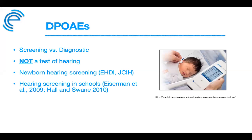For newborns with certain risk factors — such as prolonged NICU stays or syndromes — OAEs may not be sufficient and AABR is needed. For school hearing screening, DPOAEs can be used. A study by Berg and Durkin in 2006 found that DPOAEs and tympanometry are preferable to pure tone screening, which had unacceptably high referral rates of about 70%. The American Academy of Audiology's childhood screening guidelines support DP screening, which has referral rates of only about 6%.